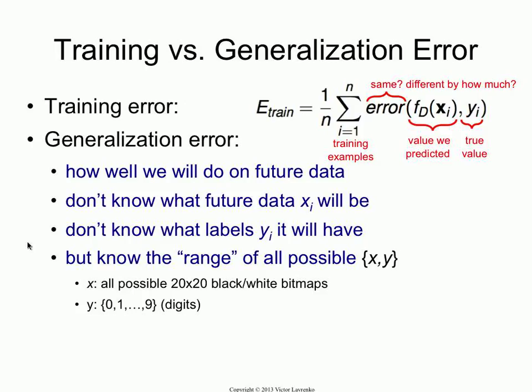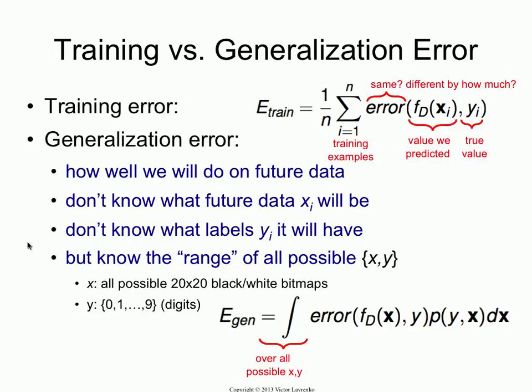So if you know the range, then you can actually write out the generalization error, and it looks like that. We still have our error function — that takes the X and the Y, and F of D of X, which is our prediction for X, and this computes how far off our prediction is from the true value. The integral goes over all possible X and Y pairs, and this P(Y,X) is the probability distribution — the joint distribution of how often in the future we would expect to have Y and X appear together. And there's an integral there — why?